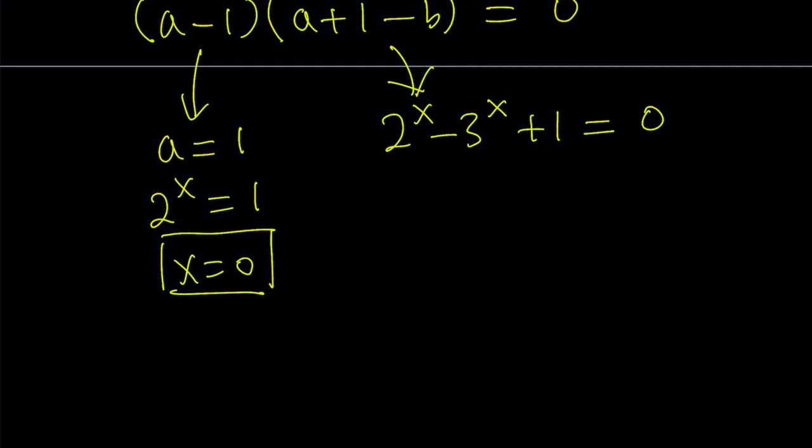Let's go ahead and take a look at the other factor because that's going to be much more interesting. I think a is 2 to the power x. I'm going to bring the 3 to the power x over here and then plus 1 is equal to 0. Now, at this point, here's what we're going to do.